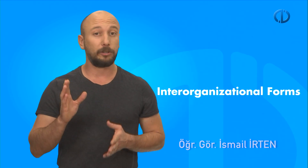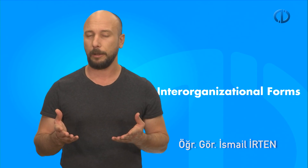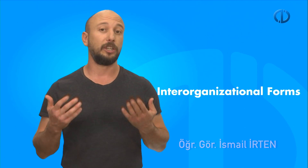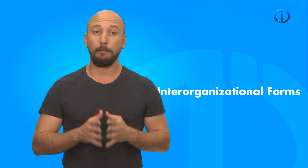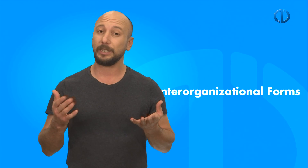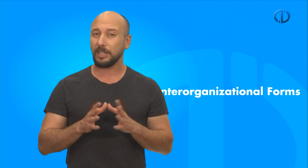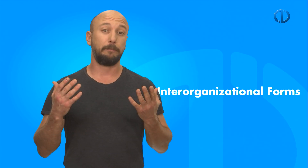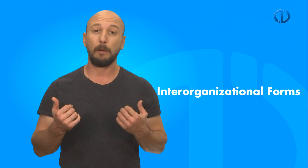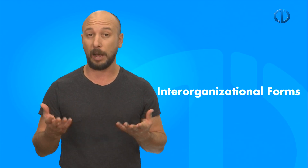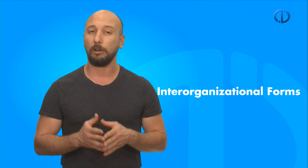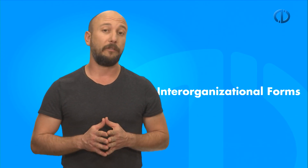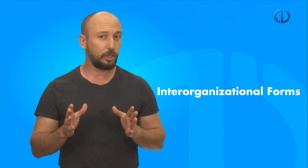Now, we can talk about interorganizational forms. When companies enter different industries which have either few or no similarities with each other, the multidivisional form becomes inadequate. That is why these companies create a business group, which is a collaboratively coordinated set of legally independent companies. The base for the reason for collaboration between the companies can be joint ownership, products, and financial or family bonds.